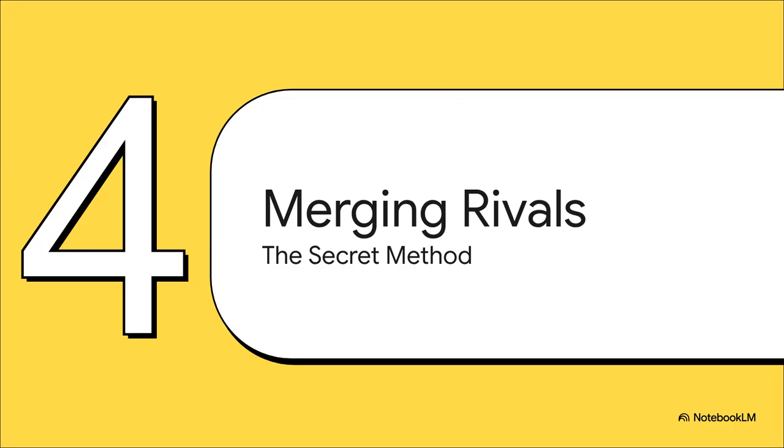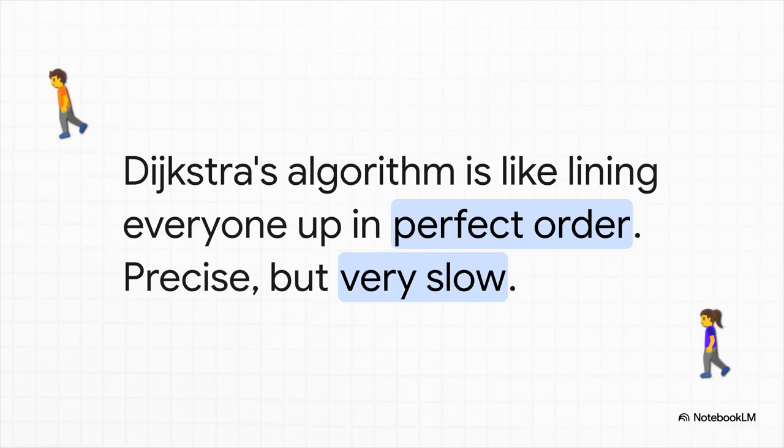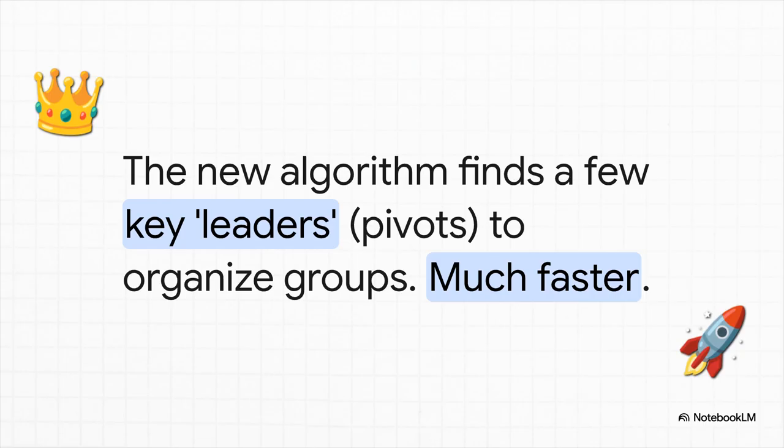So how on earth did they do it? How did they crack a problem that had the entire field stumped for half a century? Well, the answer is just so clever. They didn't choose one of the old methods over the other. They took those two old rivals, Dijkstra and Bellman Ford, and brilliantly merged them into something brand new. Think of it this way. Dijkstra's algorithm is like trying to organize a giant stadium full of people by lining them all up in perfect order of height. It's accurate for sure, but you're going to spend a ton of time just shuffling people around to keep that perfect line. The new algorithm is totally different. Instead of trying to line everyone up, it just quickly points to a few leaders in the crowd. And then those leaders organize their own little groups around them. It's a classic divide and conquer move that completely avoids the bottleneck of making one giant, perfectly sorted line.